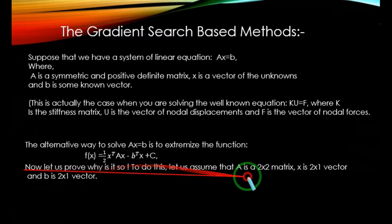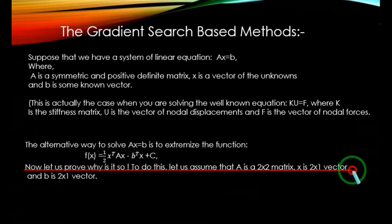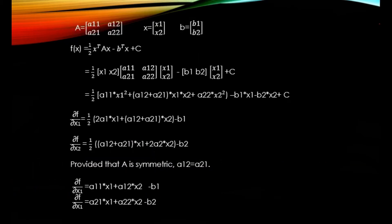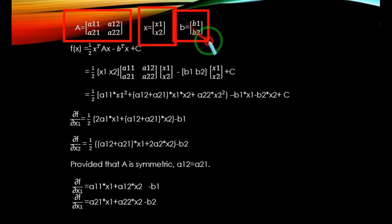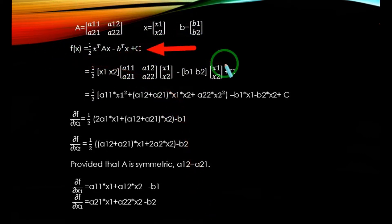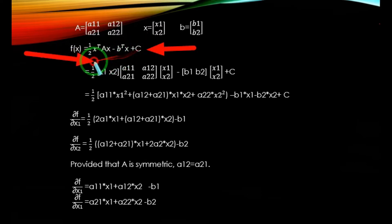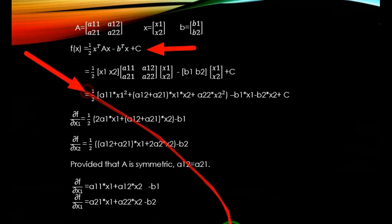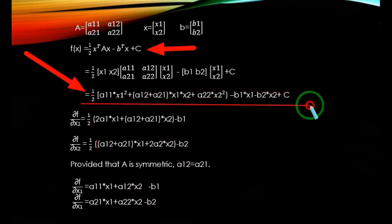Now let us prove why it is so. To do this, let us assume that A is a 2×2 matrix, x is a 2×1 vector, and b is a 2×1 vector as well. Substituting these values in the previously mentioned equation f(x) = (1/2)·x^T·A·x − b^T·x + c, we get the following results. After a few steps of matrix multiplication, you finally get this equation.